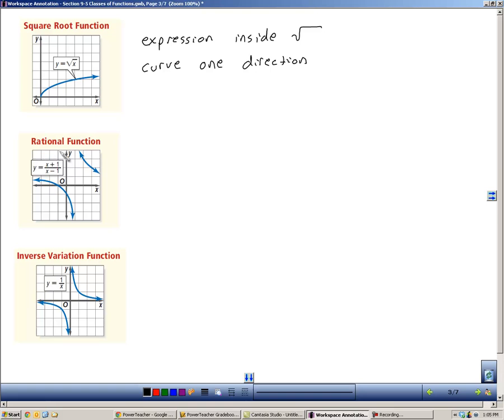The next function is the rational function. The general form looks like this: y equals p(x) over q(x), where those are just two polynomial functions. And the graph is going to have one or more asymptotes and or holes.